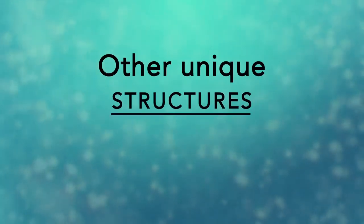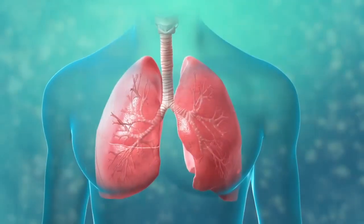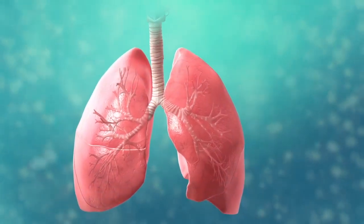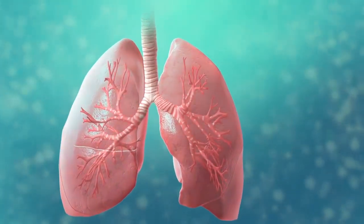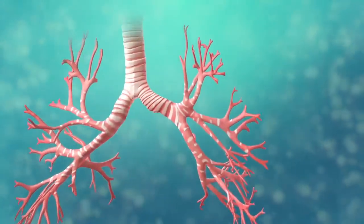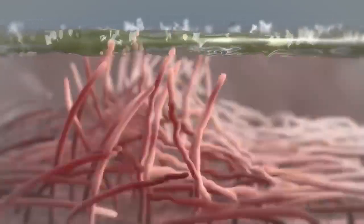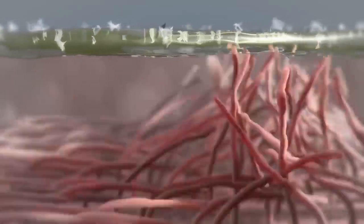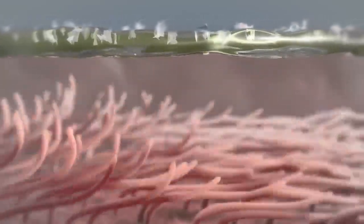There are many other unique structures that only some cells have. Here are just a few. In humans, for example, the respiratory tract is lined with cells that have cilia. These are microscopic, hair-like projections that can move in waves. This feature helps trap inhaled particles in the air and expels them when you cough.